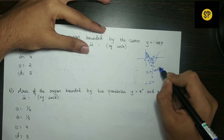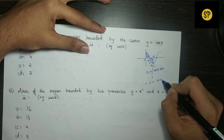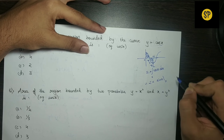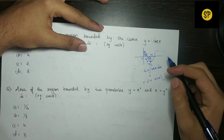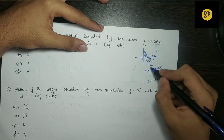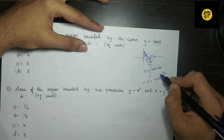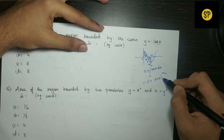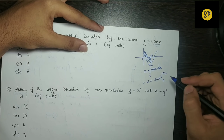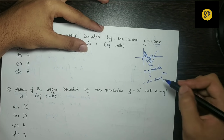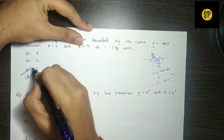So the area equals 2 into the integral of cos x dx from 0 to pi by 2. The integral of cos x is sin x. Evaluating from 0 to pi by 2: sin(pi/2) equals 1, minus sin(0) equals 0, giving 1. Then 2 into 1 equals 2. So the final answer is 2, which is option C.